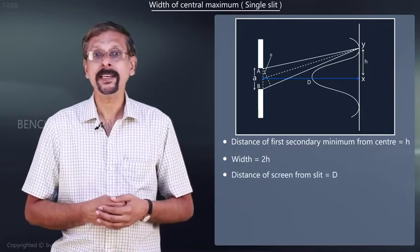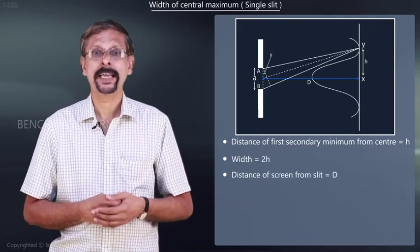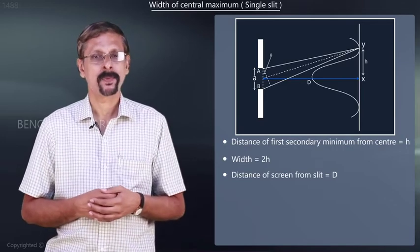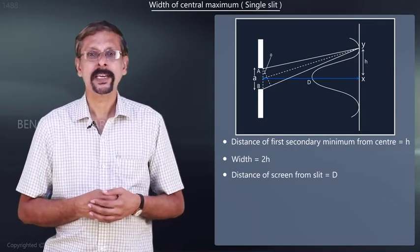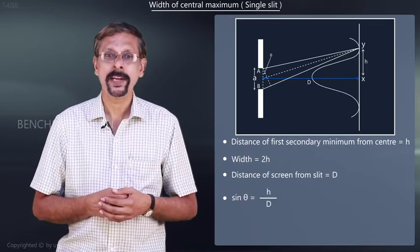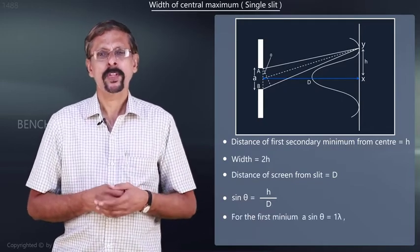The screen is kept at a distance capital D from the slit. Now, from the figure, sin θ is equal to h by D. For the first minimum,